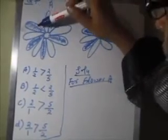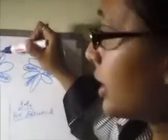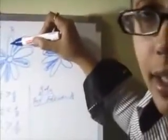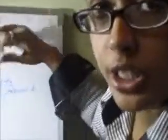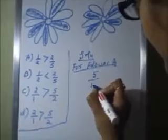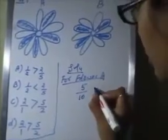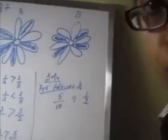How many are shaded? 1, 2, 3, 4, 5 — total 10 petals are there, out of which only 5 petals are shaded. So the fraction is 5 by 10, which is equal to 1 by 2.